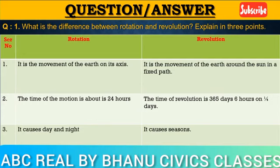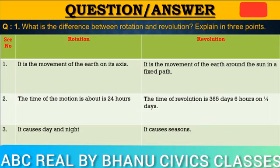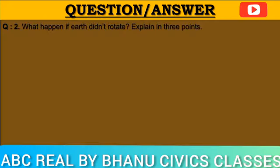Revolution: It is the movement of the earth around the sun in a fixed path. The time of revolution is 365 and one-fourth days. It causes seasons. This is the difference between rotation and revolution.